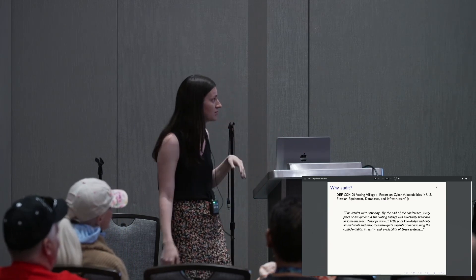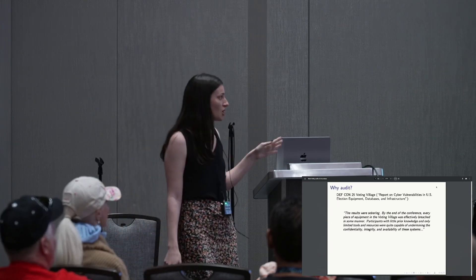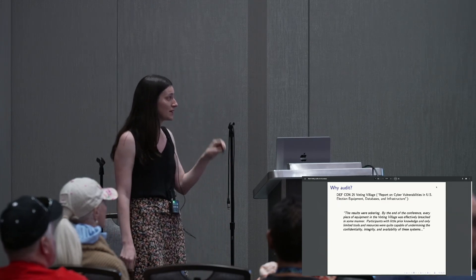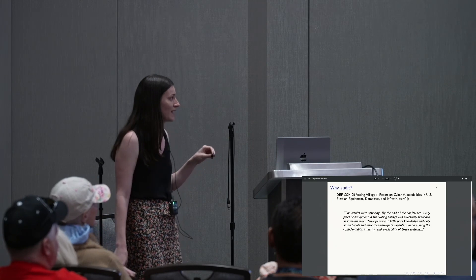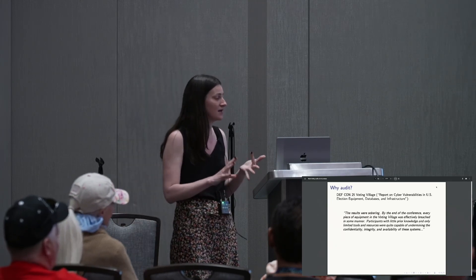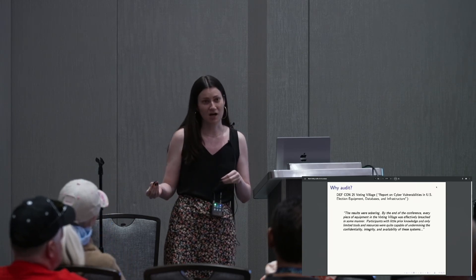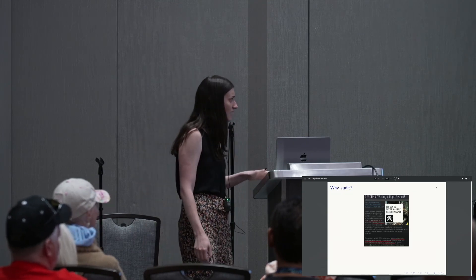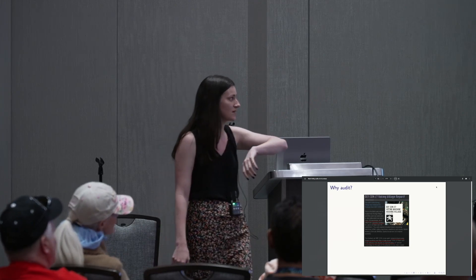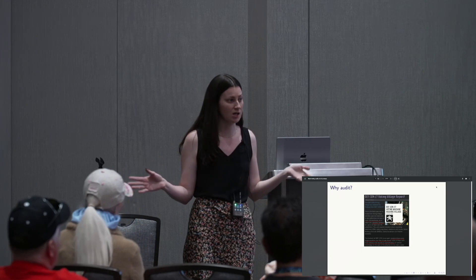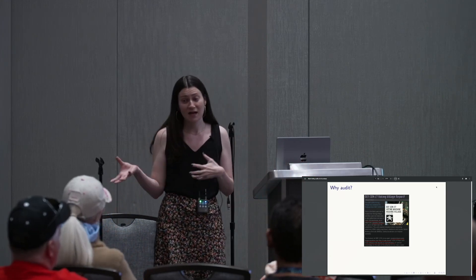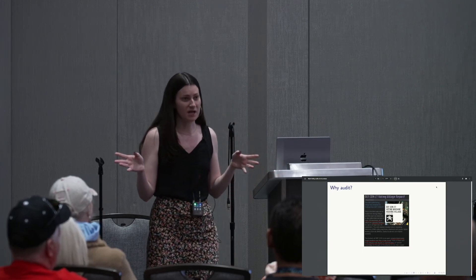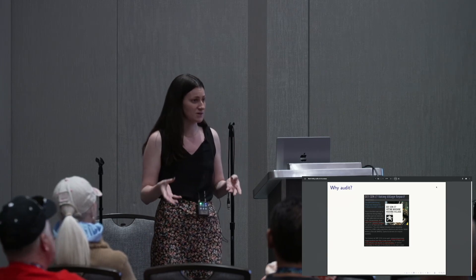From the report at DEFCON 25, they said the results were sobering: by the end of the conference, every piece of equipment in the voting village was effectively breached in some manner. Participants with little prior knowledge and only limited tools and resources were quite capable of undermining the confidentiality, integrity, and availability of these systems. Year after year, every single one of these machines has been hacked. And a couple years later at DEFCON, again — over 100 machines, all of which were hacked into. So because we have these vulnerabilities coupled with human error and device malfunctions, we really need a way to check the election results.